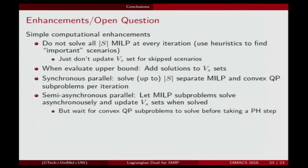It's easy to do this synchronously in parallel — at each step you have separate MILP and convex QP subproblems per scenario. As John Paul mentioned, synchronous MILP parallelism can slow things down. But it's easy to do a semi-asynchronous version: the MILP subproblems don't all have to finish — you add their solutions when they do finish. You still synchronize on the convex QP subproblems, then proceed. This semi-asynchronous approach can still be shown to eventually converge.